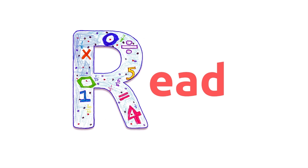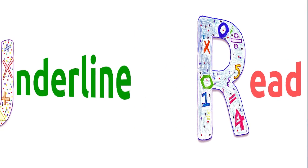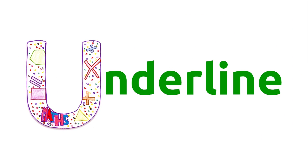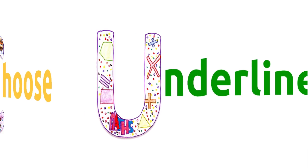R is for read the question. Let's face it, it would be pretty hard to solve a problem without reading it first. U is for underline important information — this is when we pick out the key information from the question.